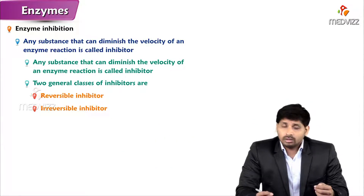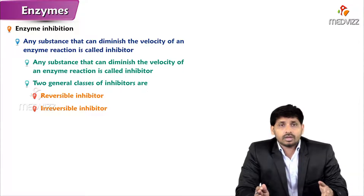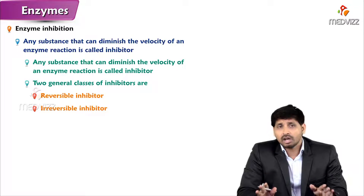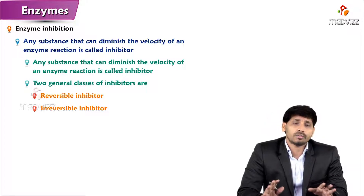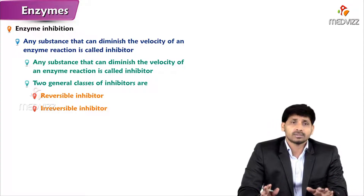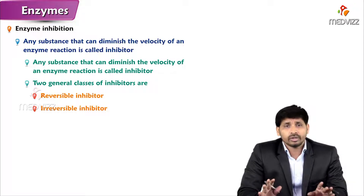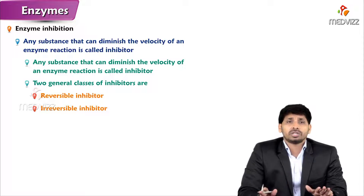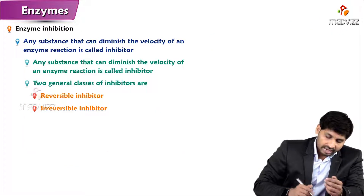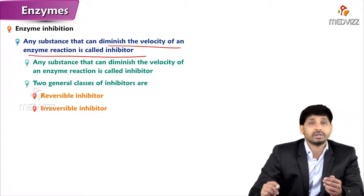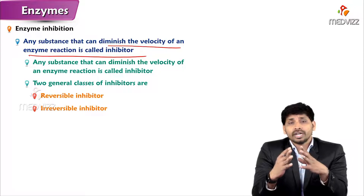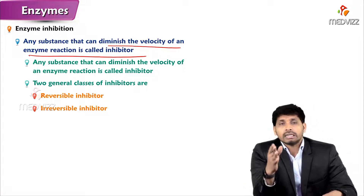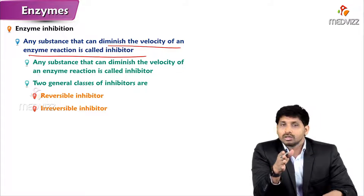In this video we'll be discussing enzyme inhibition. Previously, we discussed the mechanism of enzyme action — how enzymes react with substrates, form enzyme-substrate complexes, and produce products. There are some substances called inhibitors which interfere with the enzyme-substrate complex or bind to the enzyme and stop product formation. Any substance that can diminish the velocity of an enzyme reaction is called an inhibitor, causing decreased reaction velocity.